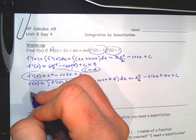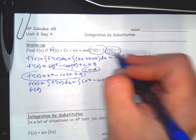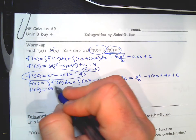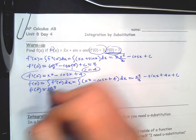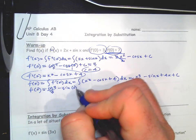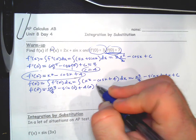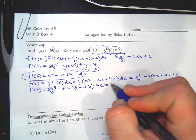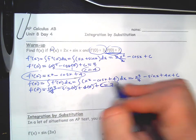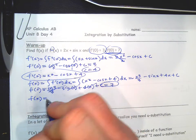You're halfway there. The original function is going to be the integral of the derivative — the integral of (x² minus cosine x plus 4) dx. The antiderivative is x³/3 minus sine x plus 4x plus C.